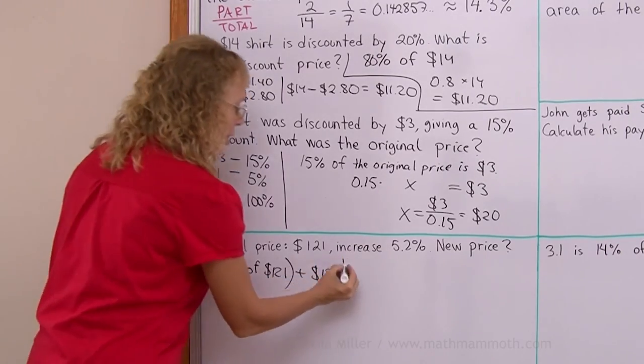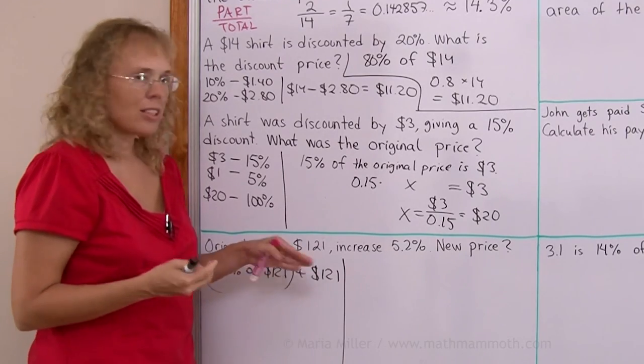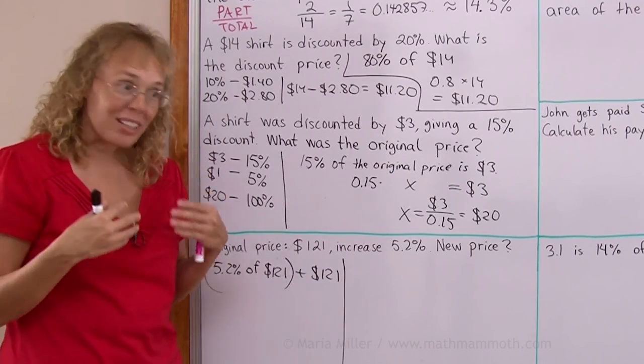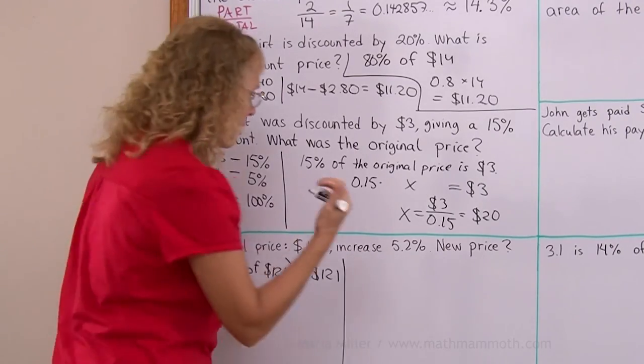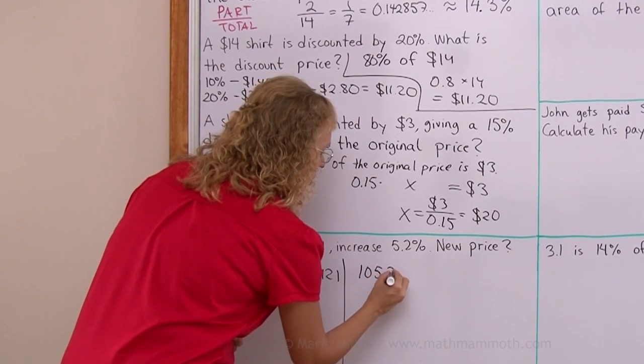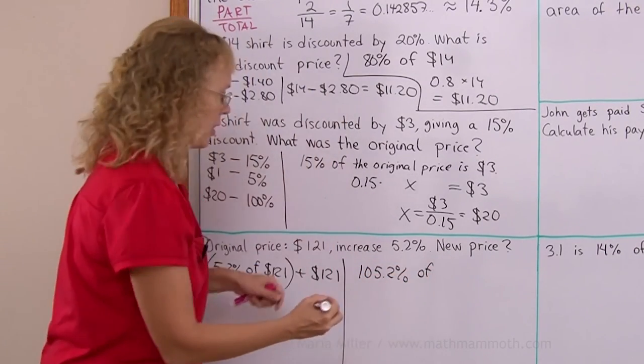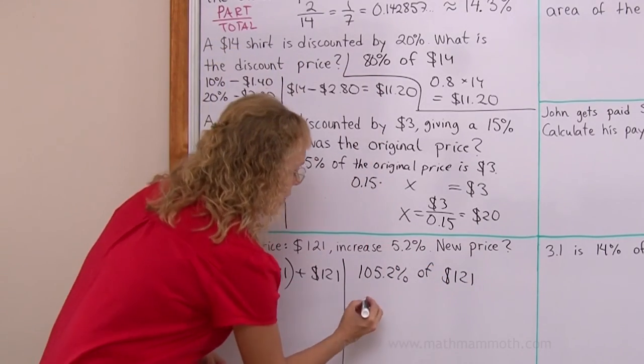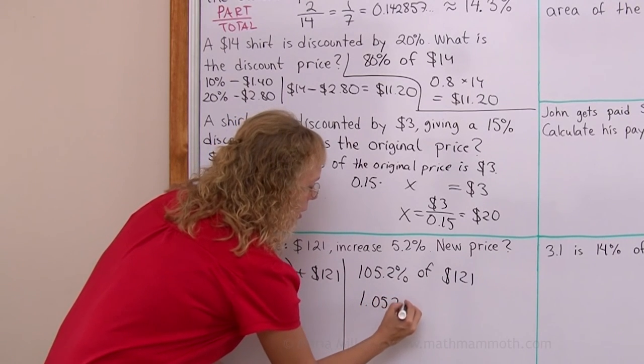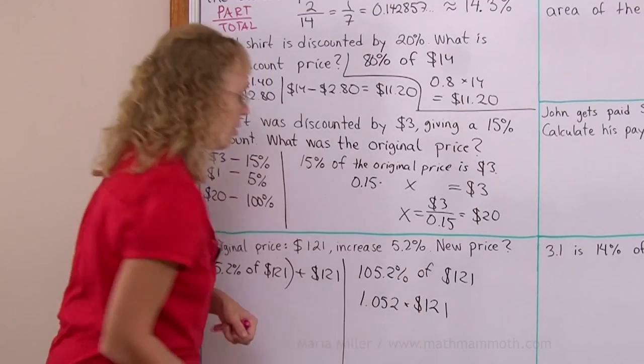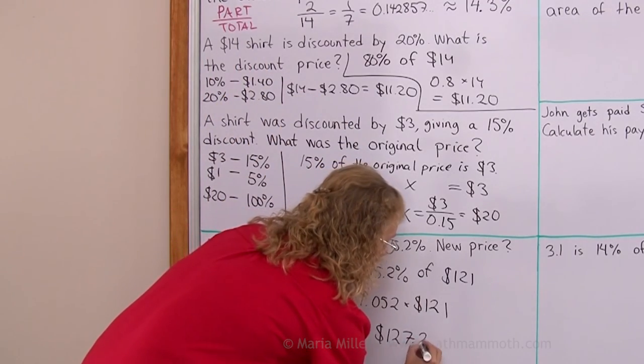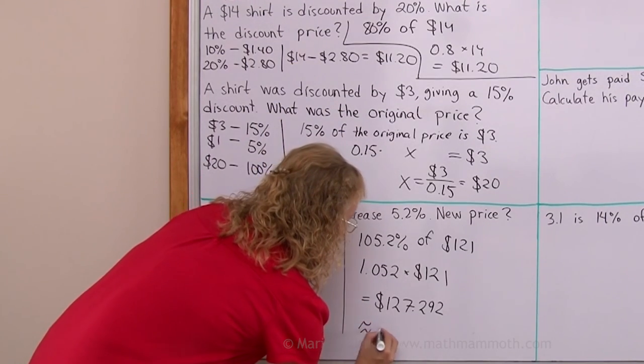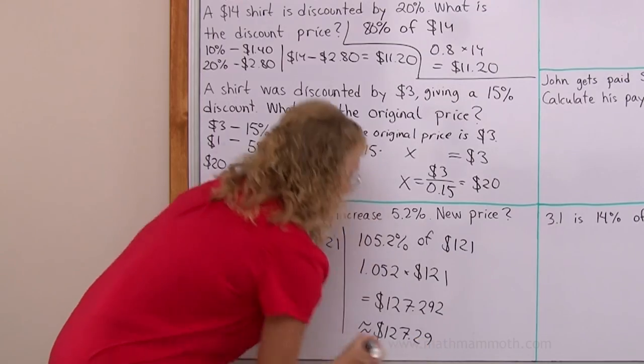I always calculate this kind of thing, thinking that the original price is 100% of the price. When we increase it by that, then we just simply calculate 105.2 percent of the price. We just calculate 105.2 percent of this amount. And of course, again here, I'll change this into a decimal. It is 1.052 times $121. And this is 127.292, which you would need to round to the nearest cent. So 29 cents here.